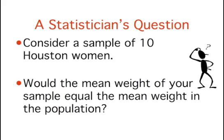A critical question in inferential statistics is determining the degree to which sample statistics vary from each other and from the population parameter. Consider whether the mean weight from a sample of 10 Houston women would equal the mean weight of all women in Houston. You would not expect your sample mean to be exactly equal to the mean of all women in Houston — it might be somewhat lower or somewhat higher, but not exactly the same.